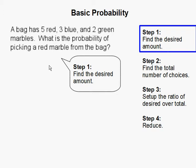Step 1: Find the desired amount. What are they asking for? They are asking for the red marble. And there are 5 red marbles, so I am going to leave that number 5 to the side.